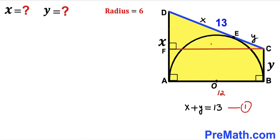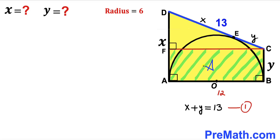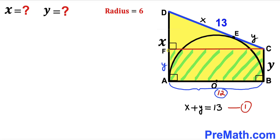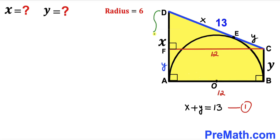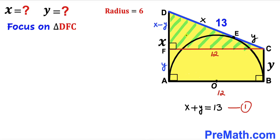In the next step, I drop a perpendicular CF onto side AD, giving us right triangle DFC. Focusing on rectangle ABCF, side BC equals side AF, so if BC is Y then AF is Y as well. Since diameter AB is 12, side FC is 12 units as well. The whole AD length is X and AF is Y, so DF equals X minus Y.